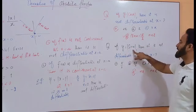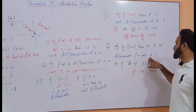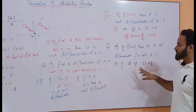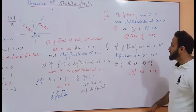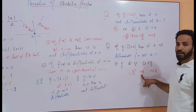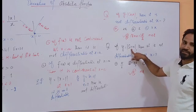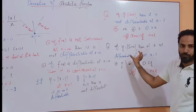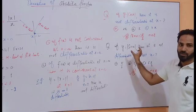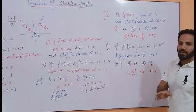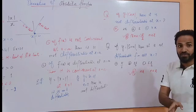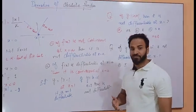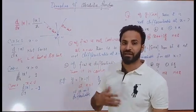Another question: y equals |sin x|, and it is not differentiable for all x equal to what? The right answer is d, because at nπ, sin x becomes 0, which means the absolute becomes 0. When the absolute becomes 0, it indicates the function is not continuous, and if it is not continuous, it is not differentiable. These two questions have appeared many times in different exams.